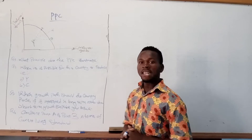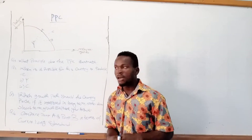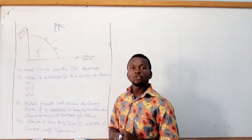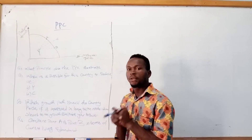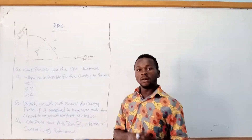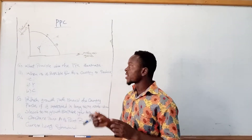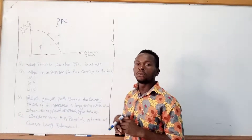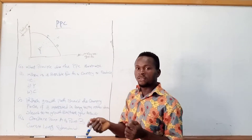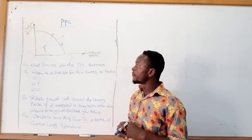This question is under the Production Possibility Curve. When we talk about the Production Possibility Curve, we must always explain it linking it to the production of two goods. It can either be Capital Good — also known as Producers Good — or Consumers Good. Capital Good and Producers Good refer to the same thing.